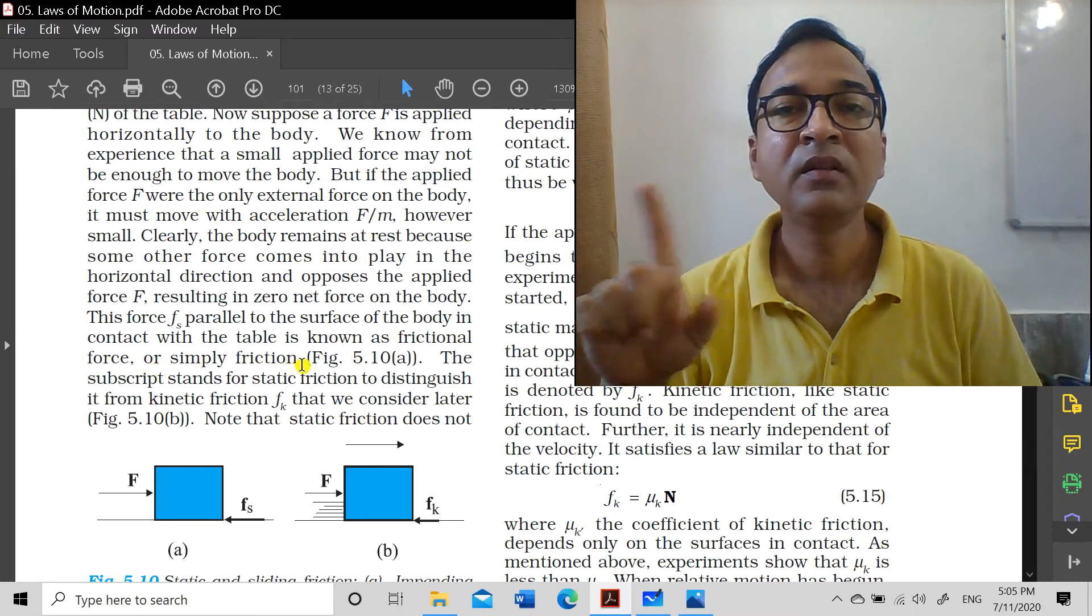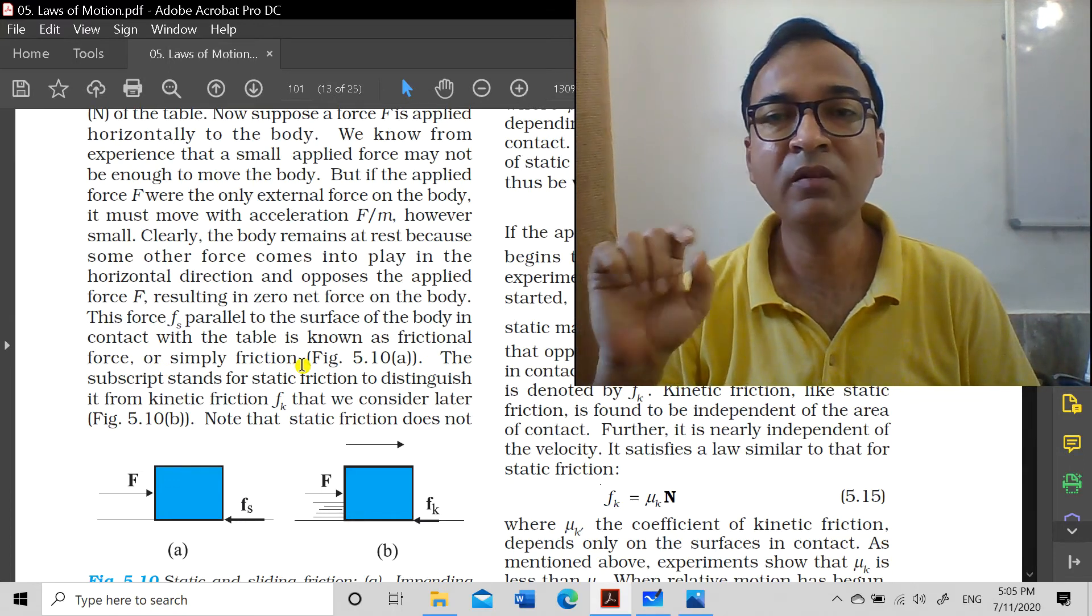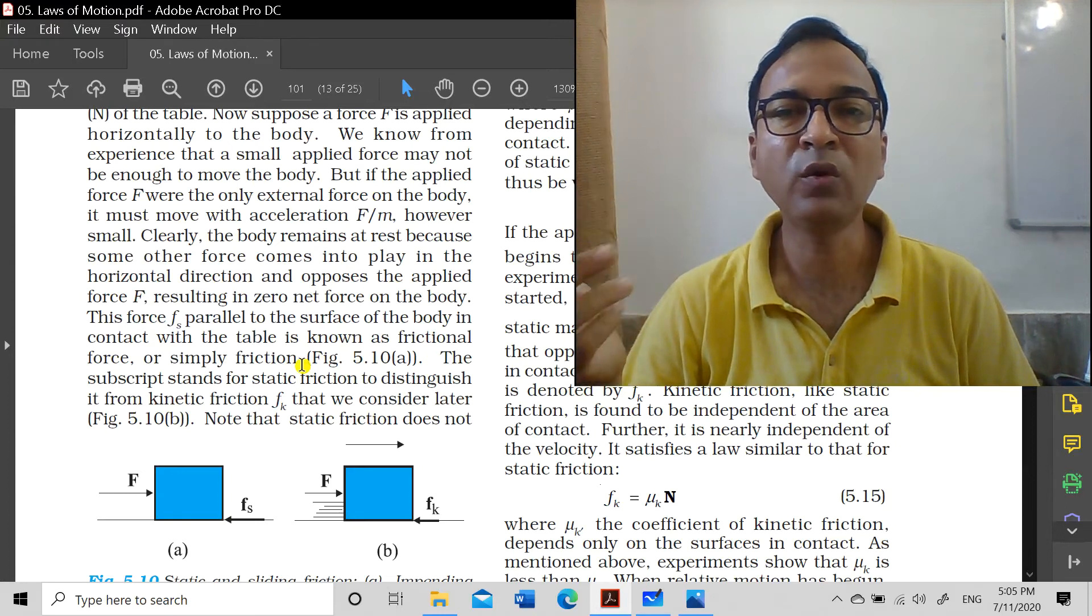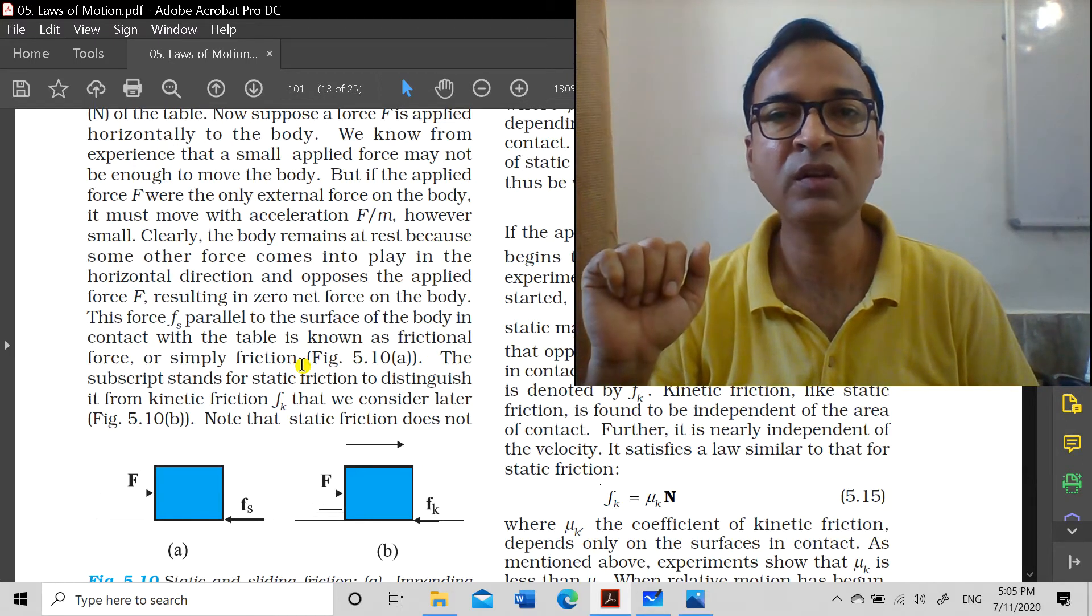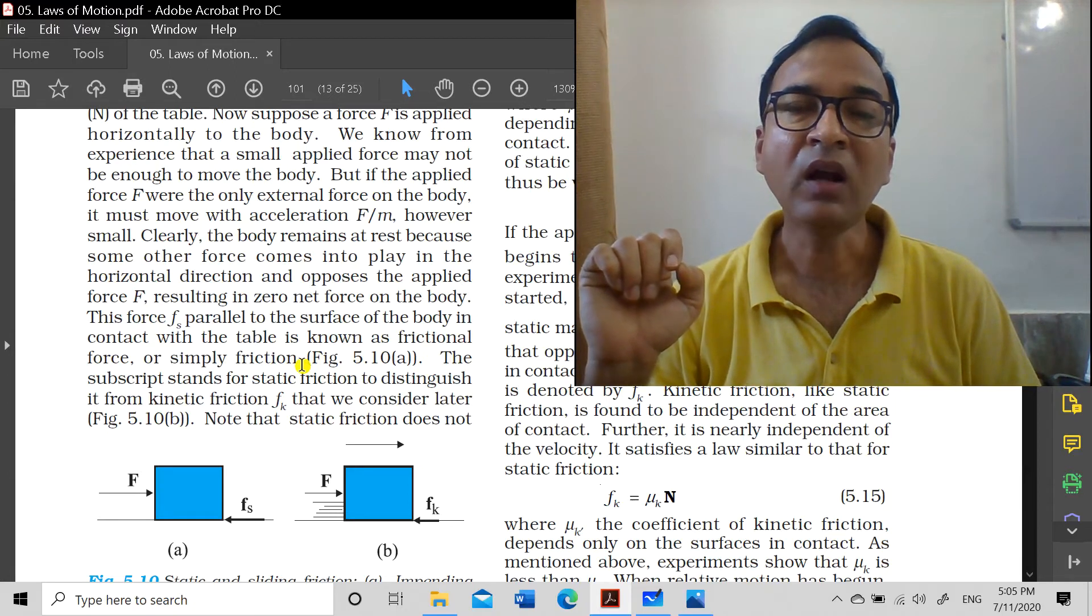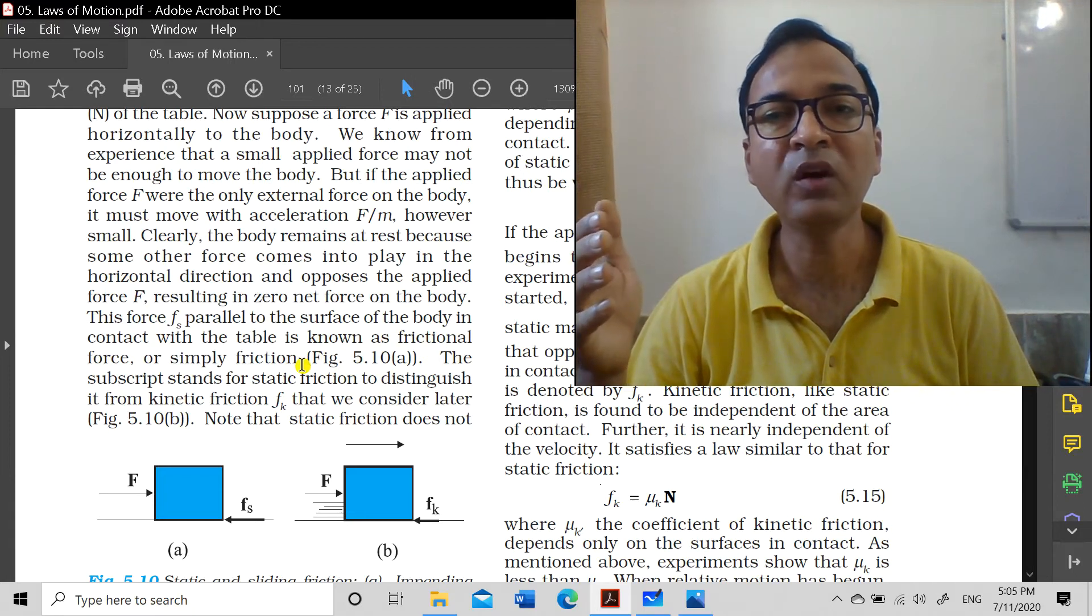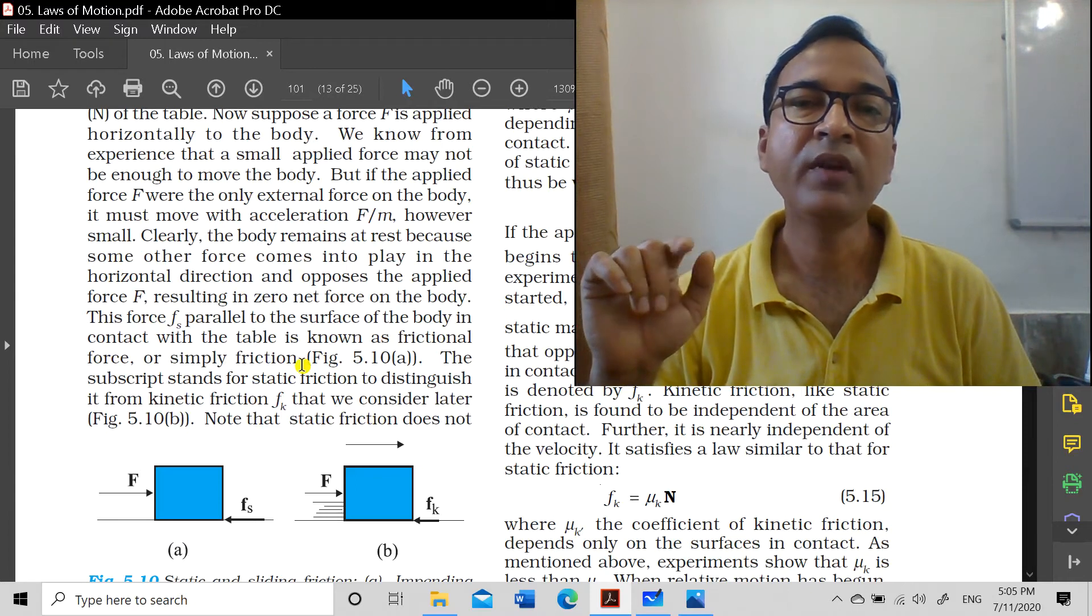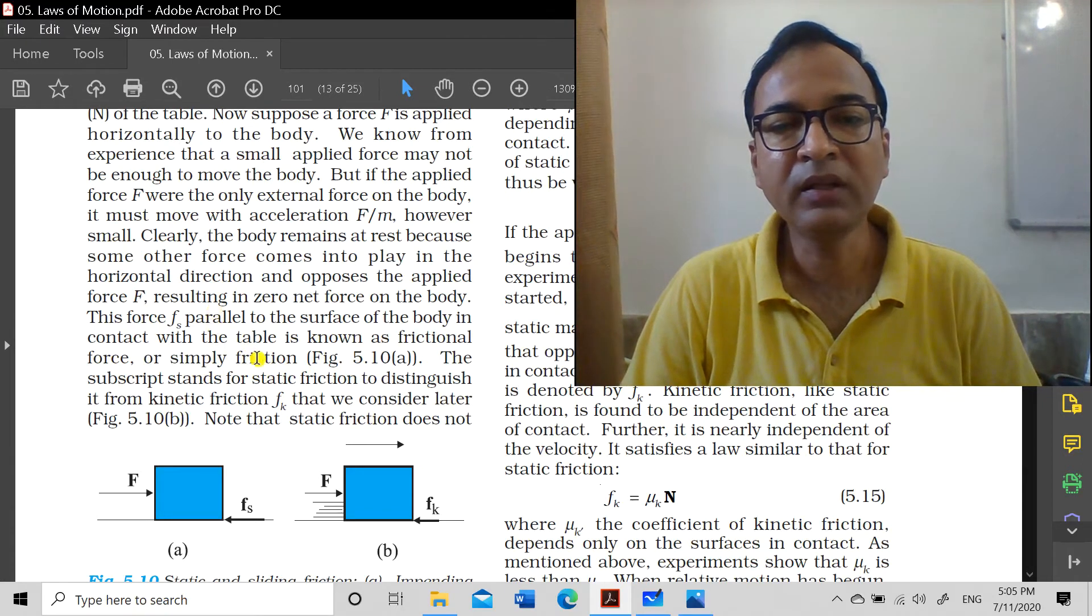Friction is actually a property - it's a quality due to which relative motion between two mating surfaces, two surfaces in contact, is opposed. This quality is called friction, and the force it produces is called force of friction or frictional force. But writing 'force of friction' or 'frictional force' is lengthy, and we don't use the property friction itself much - we use its output, the force. So we start calling the frictional force simply 'friction'.